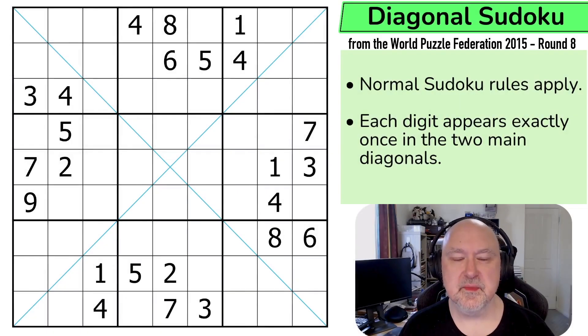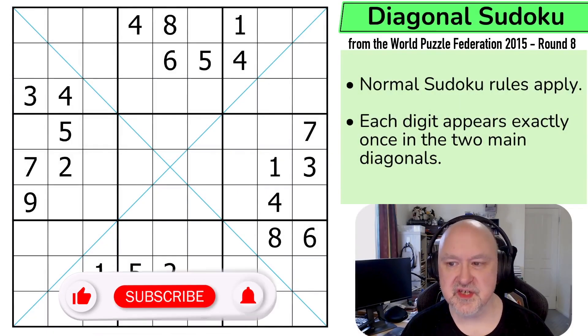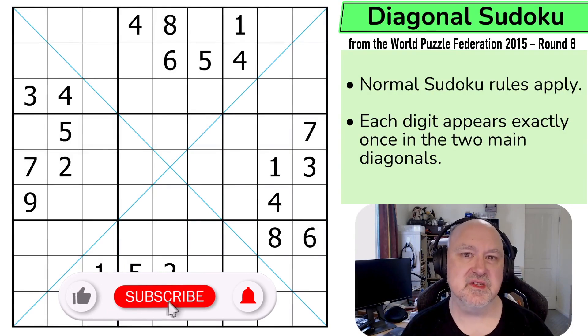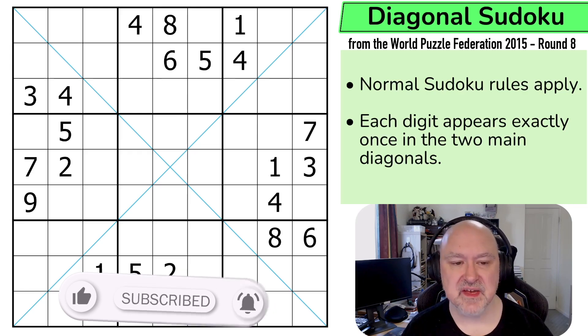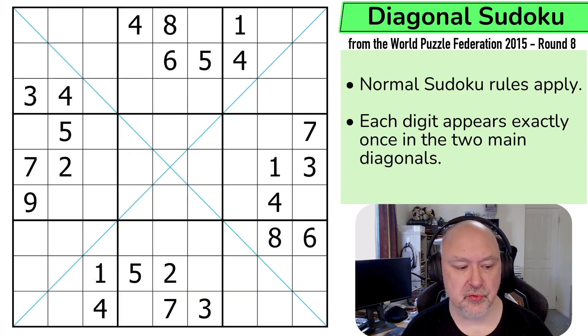Hi, and welcome to Bremster Puzzles, and back to the World Puzzle Federation 2015 Round 8, which was a series of puzzles created by puzzle creators from the United Kingdom. This is a 50-point diagonal Sudoku created by David McNeil. This one is starting to ramp up the difficulty a little bit. There'll be a link in the description below to this puzzle, as well as to the entire World Puzzle Federation archive.